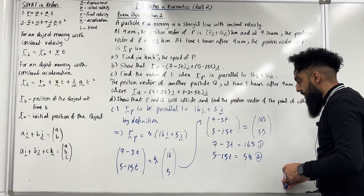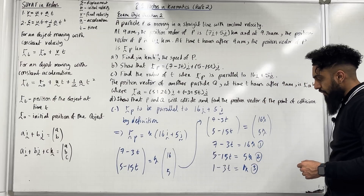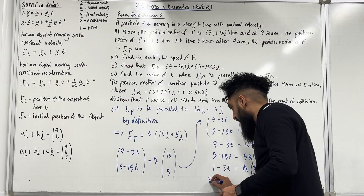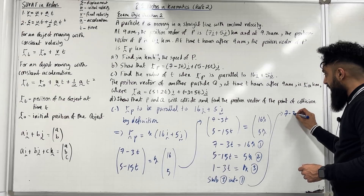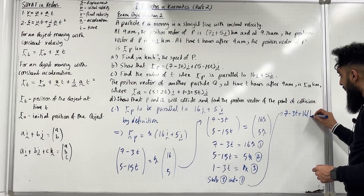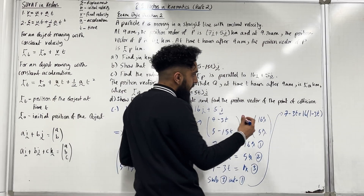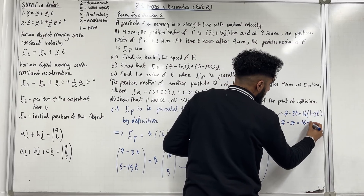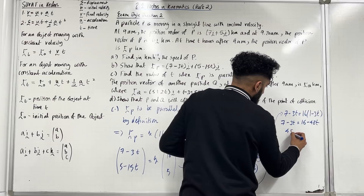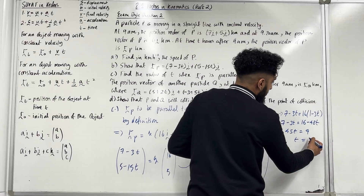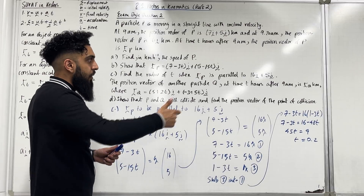Dividing equation 2 by 5: 1 − 3T = λ — equation 3. Substituting equation 3 into equation 1: 7 − 3T = 16(1 − 3T), which gives 7 − 3T = 16 − 48T. Rearranging: 45T = 9, so T = 9/45 = 0.2. When T = 0.2, R_P is parallel to the vector (16i + 5j).